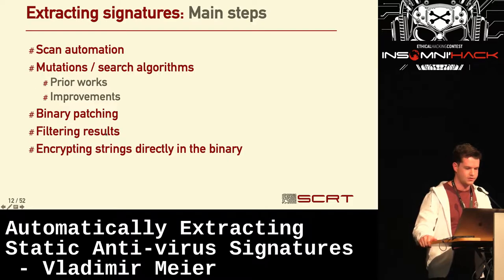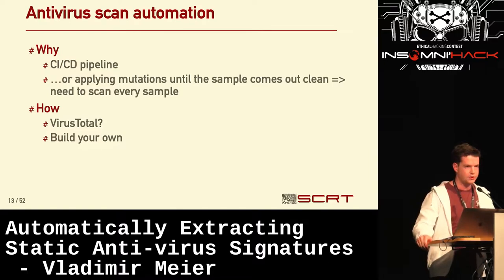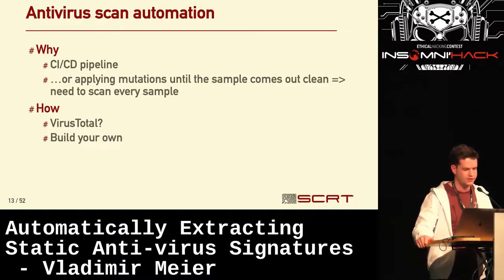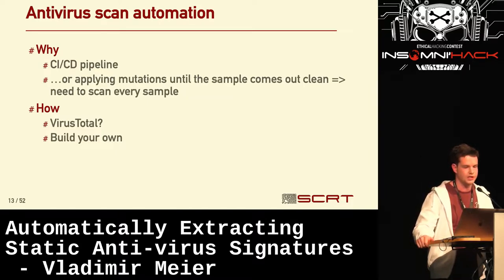This is the way the rest of my talk is organized. The first thing we have to do is automate scans, because you might run a red team with a set of tools you've been using for years and you want to be aware when those tools get detected by some antivirus. More specific to this talk, we want to apply thousands of mutations on a sample until the sample comes out clean. And to do that, we have to automate scans — we obviously won't do that manually.